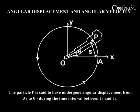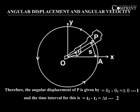The particle P is said to have undergone angular displacement from theta1 to theta2 during the time interval between t1 and t2. Therefore, the angular displacement of P is given by theta2 minus theta1 equals delta theta, and the time interval for this is t2 minus t1 equals delta t.